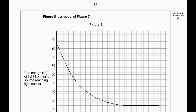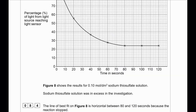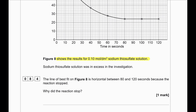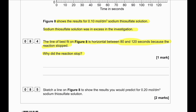Figure 8 is a repeat of figure 7, showing results for 0.1 mol/dm³ sodium thiosulfate solution, which was in excess. The line of best fit on figure 8 is horizontal between 80 and 120 seconds because the reaction stopped. Why did the reaction stop? Because the hydrochloric acid was used up — it acts as the limiting reactant.